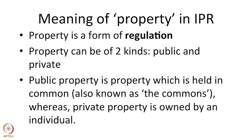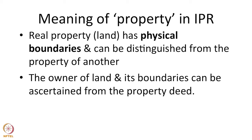Now let us look at what we mean by the word 'property'. Property is a form of regulation. When it comes to intellectual property, we are talking about a form of regulation of creations that come out of the mind. Property can be either public property or private property — these are two broad classifications. Public property is something held in common, what we call the commons, and private property is something which a person holds individually. To understand the concept of property, we need to take the analogy of land or landed property.